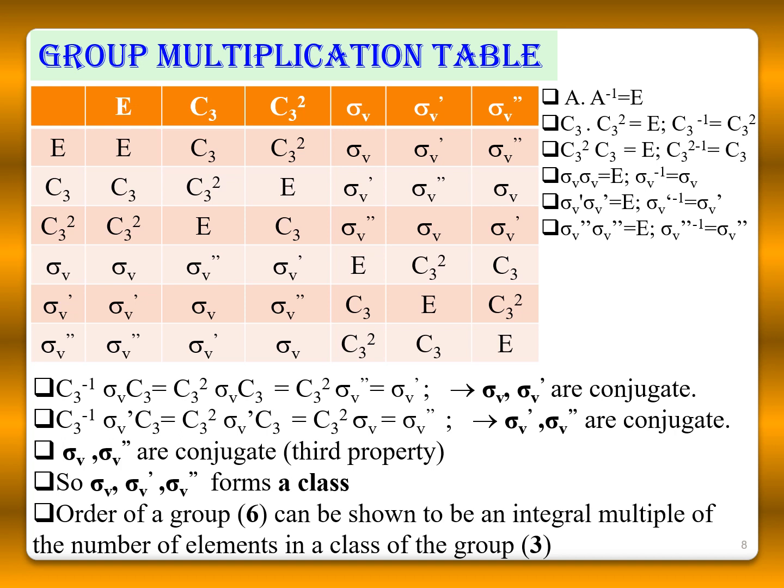From this table, we can find that C3 times C3² equals E, so C3 inverse is nothing but C3². Similarly, C3² times C3 equals E, so C3² inverse is nothing but C3. And σv times σv equals E, so the inverse of σv is σv itself. Similarly, for σv prime and σv double prime, the inverse is itself.